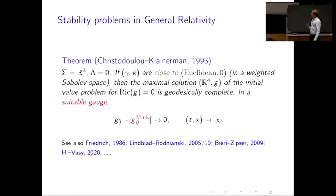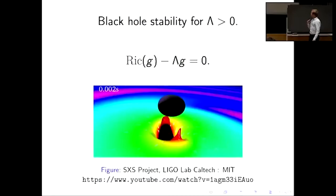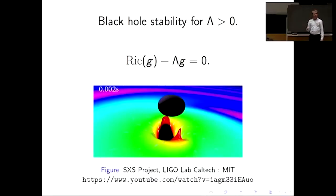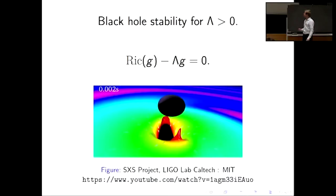There is a precursor to this for special initial data, and this theorem has generated a lot of activity — there are many related theorems on the Minkowski stability problem, as well as lots of related work for matter models. What I want to talk about now is the stability problem for black holes. The first and main part of the talk concerns black hole stability for positive cosmological constant, corresponding to black holes inside universes undergoing accelerated expansion. I'll explain why that makes the problem more tractable mathematically.